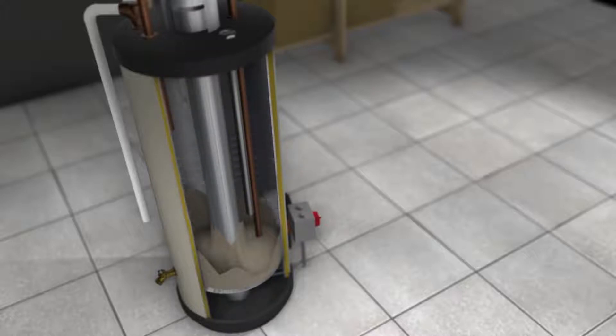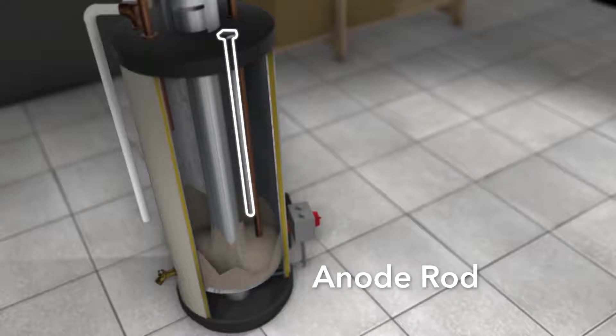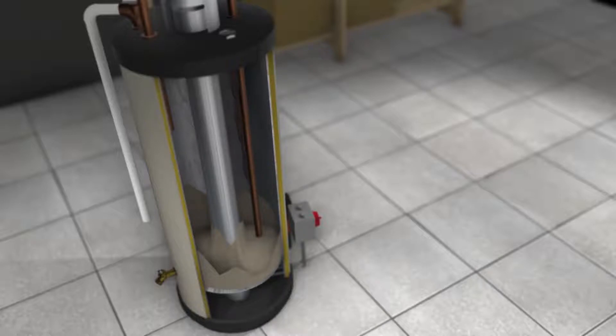However, your water heater has a built-in safety device called an anode rod, sometimes called a sacrificial anode rod. It corrodes, protecting the metal lining of your water heater, but eventually the anode rod dissolves.